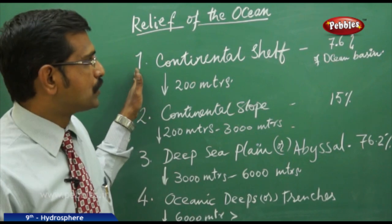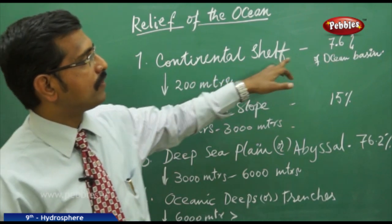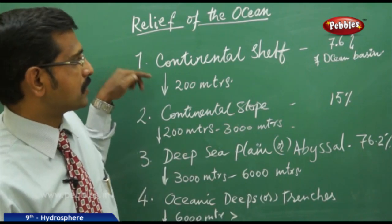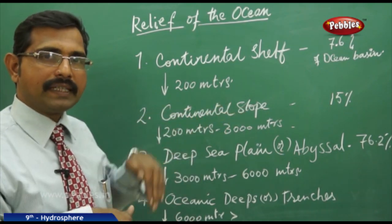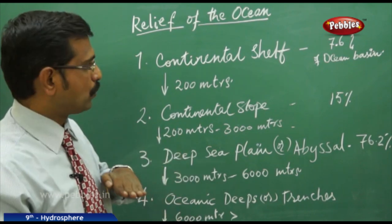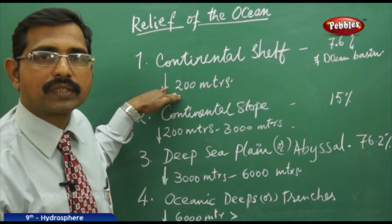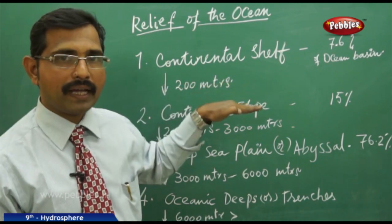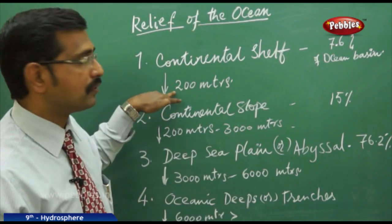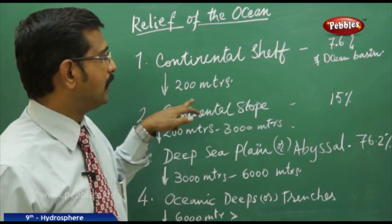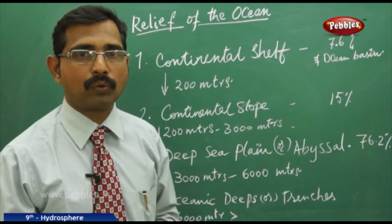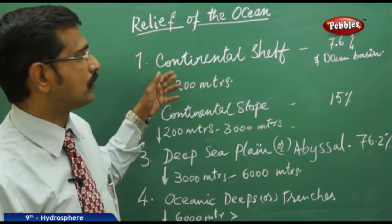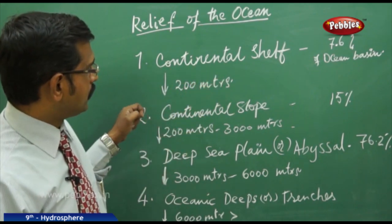The first part is the continental shelf, forming 7.6% of the ocean basin, found under 200 meters depth. It is a major source for humans to obtain fish, and seaports are built on continental shelves. We also depend on the continental shelf for petroleum and other resources.